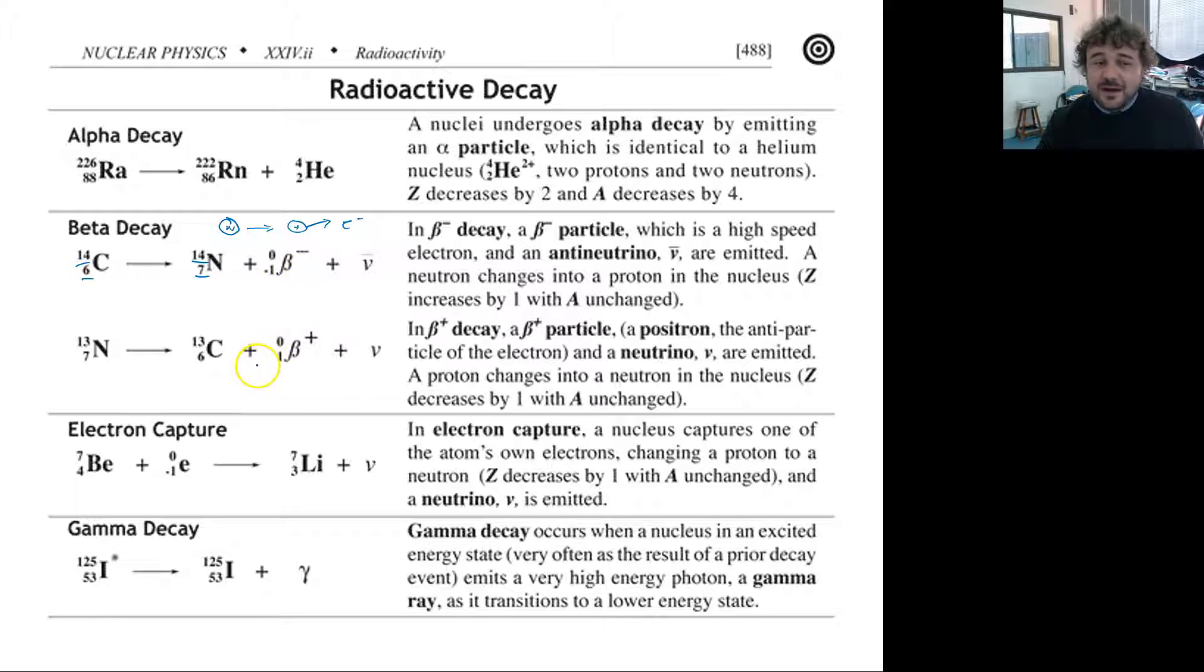Over here however we have beta positive decay. Now beta positive decay, one of the protons, so that's where the positive comes, you've got this high speed positron, and you also get an anti-neutrino that comes out as well. The anti-neutrino is essentially energy. It's a massless particle.